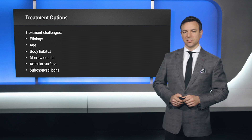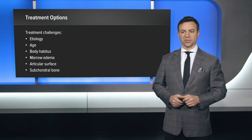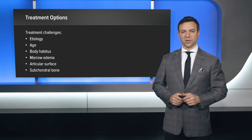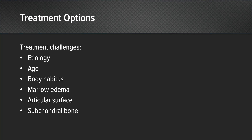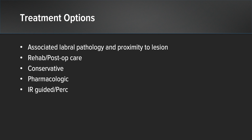The case in question presents a number of treatment challenges. Obviously, we're dealing with a young, physically active patient with a larger body habitus. We have to incorporate elements of treatment that are able to provide options for both the marrow edema, the biologically reactive lesion, the articular surface, the subchondral bone, and the surrounding labral pathology and synovitis.